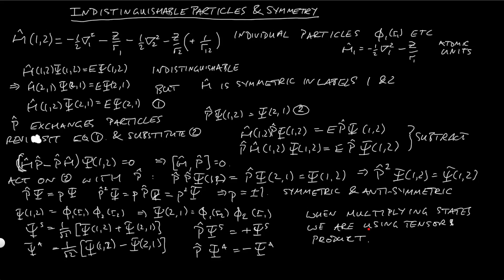So what I've covered here is the exchange and symmetry properties of indistinguishable particles when we have more than one particle. We start by thinking about the Hamiltonian — as we've found in quantum mechanics, it's generally simple to write down but more complicated to solve. We then assume symmetry properties based on the indistinguishability of particles, which allows us to prove that the exchange operator commutes with the Hamiltonian. Applying the exchange operator twice reverts us to the original system, telling us the eigenvalues must be ±1, from which we deduce the symmetric and anti-symmetric eigenstates formed by combining states of the Hamiltonian.